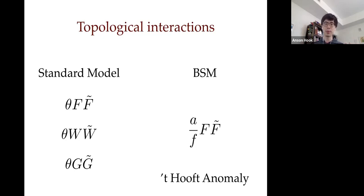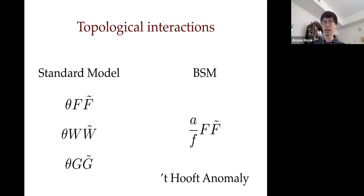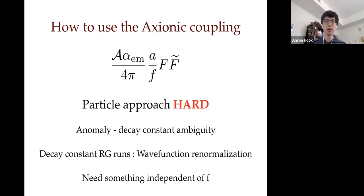In the context of beyond-Standard-Model particles, the 't Hooft anomaly corresponds to a scalar field — the axion — that couples to the photon via F F-tilde, just like the topological parameter theta. What this field does is take the topological parameter theta and make it dynamical.